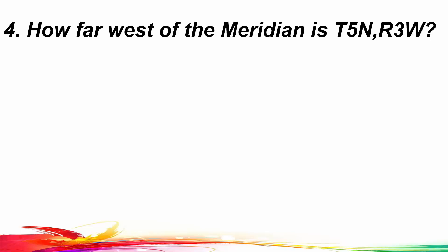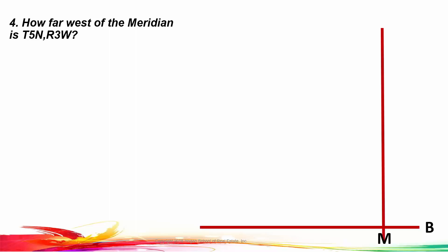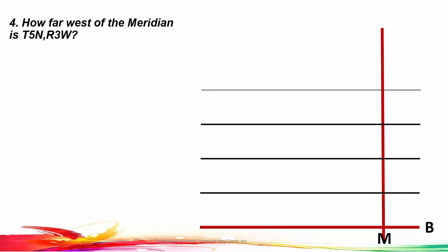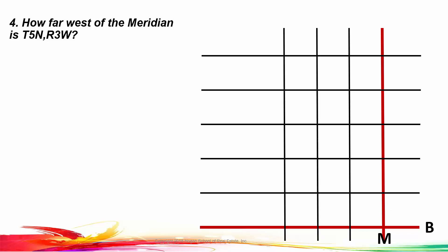Number four: how far west of the meridian is Township 5 North, Range 3 West? To solve this problem we have to draw our baseline and our meridian. It says Township 5 North, so we go five township lines north of the baseline — each of those lines is 6 miles apart. Then Range 3 West, so three ranges west of the meridian. And there is Township 5 North, Range 3 West.